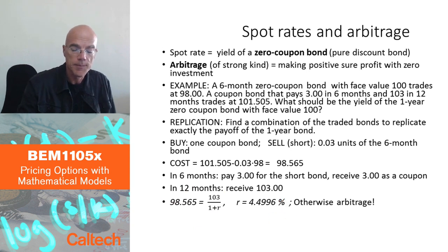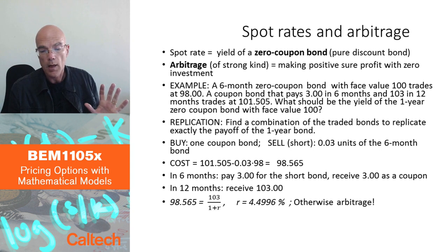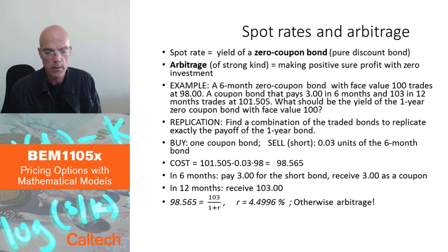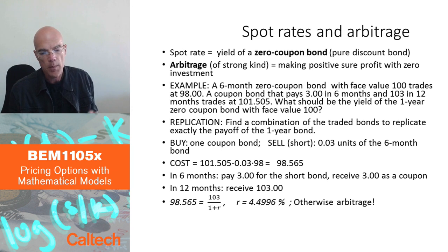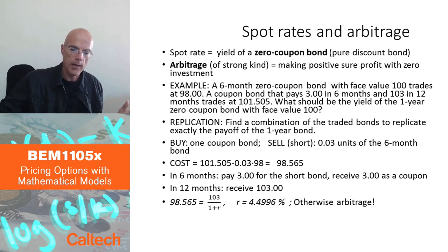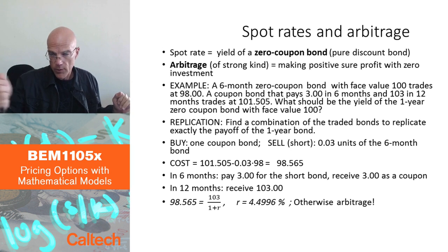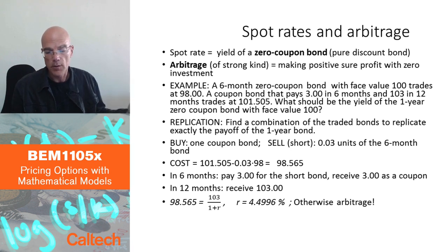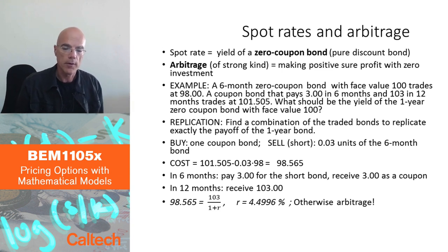I can compute the annual rate from the standard present value formula: the rate works out to approximately 4.5%. Otherwise there would be arbitrage — free money — in this market. This illustrates the replication idea: if I can replicate a one-year zero coupon bond's payoff using a portfolio of other assets, that portfolio's cost tells me exactly what the original payoff is worth.